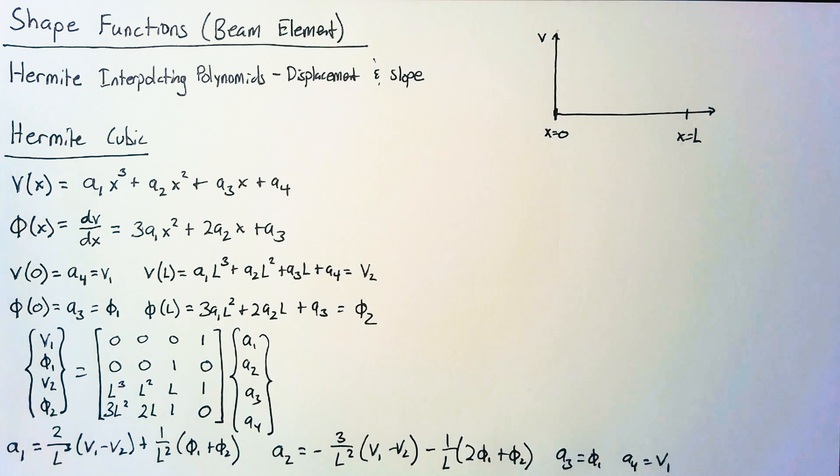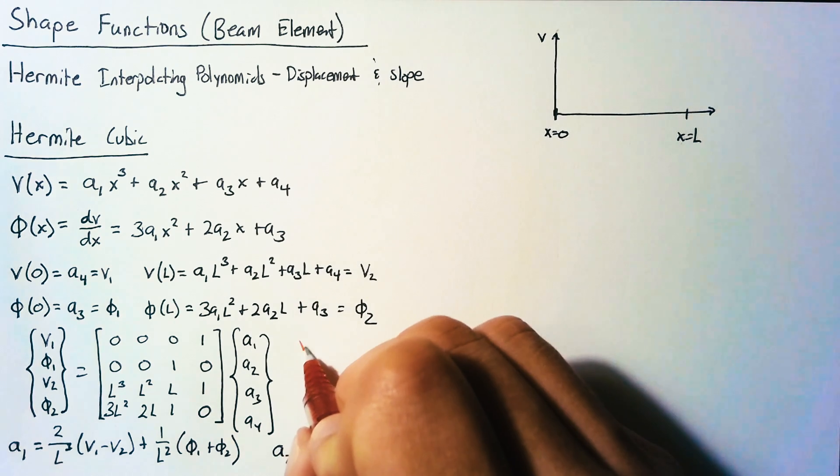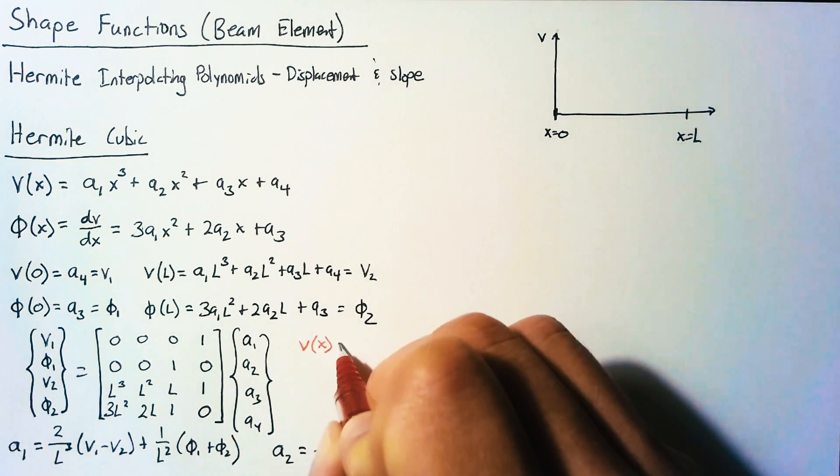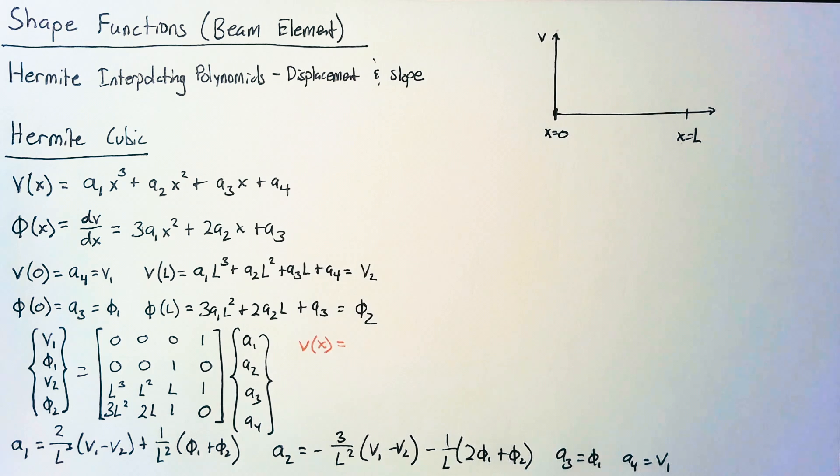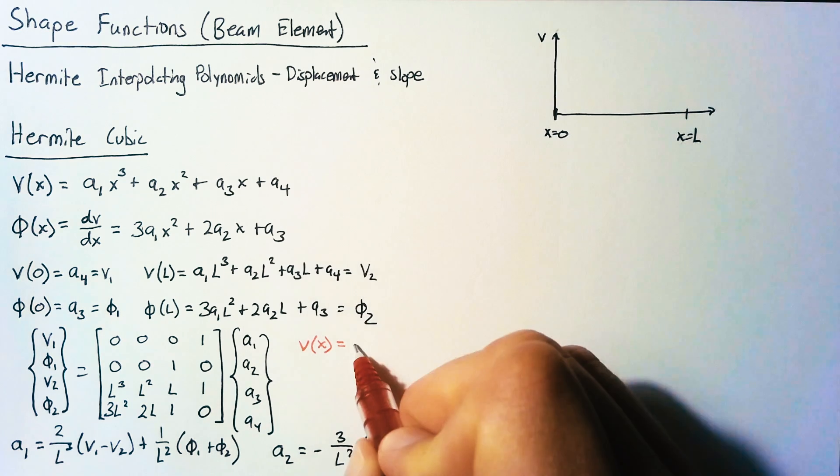So now using those, let's go ahead and write out our v of x. Now remember from before, we're going to want to arrange these in such a way that we have our nodal displacements isolated. So I'm going to go ahead and do that step here as well.